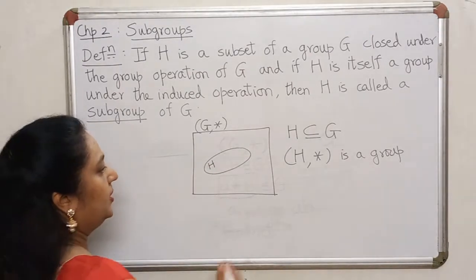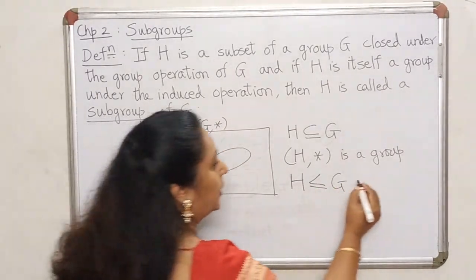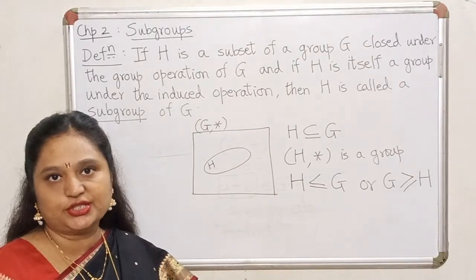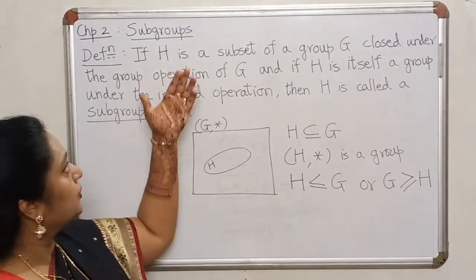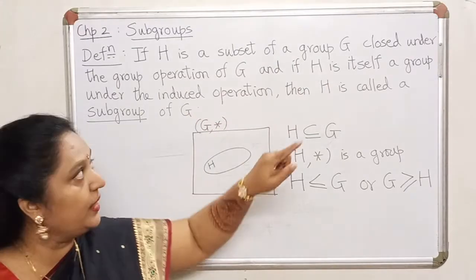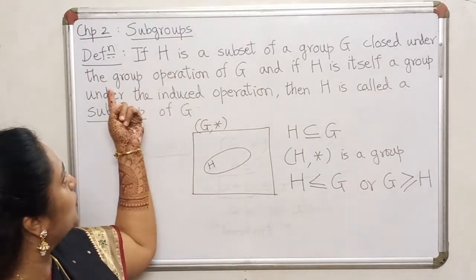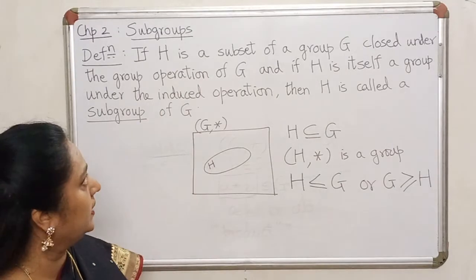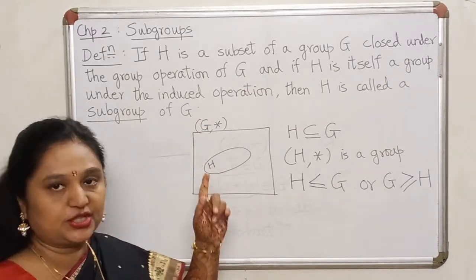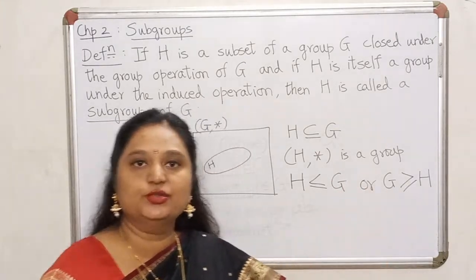If H is a subgroup of G, I will use the notation H less than or equal to G — or you can also write it the other way. This is the notation we are going to use for a subgroup. So: suppose H is a subset of a group G, this set is closed under the binary operation of G, and H also becomes a group on its own under the same operation as in G. Then we say that H is a subgroup of G.